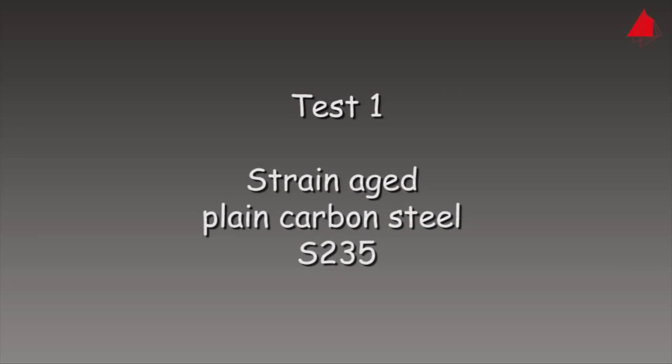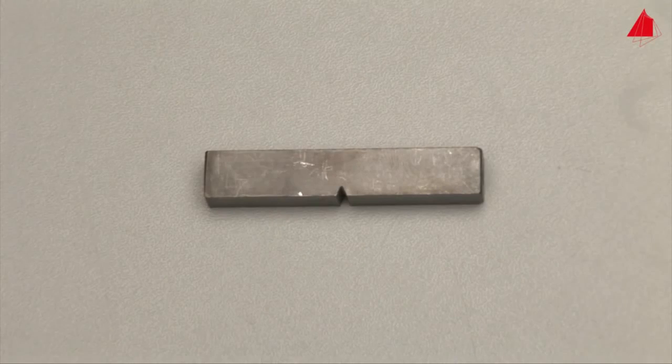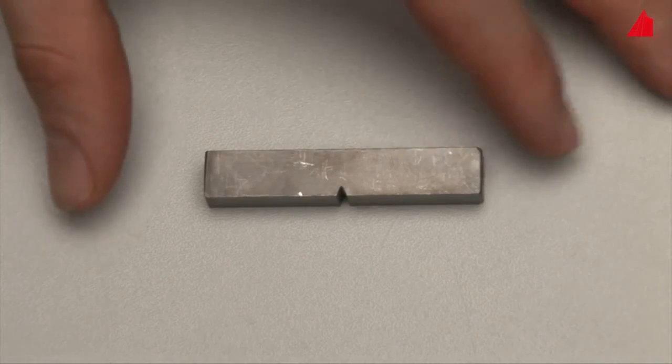First test, strain aged plain carbon steel S-235. This is our test specimen. It has been machined to standardized size and shape with the characteristic v-shape notch.